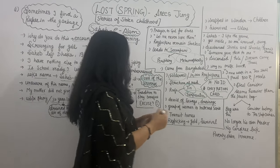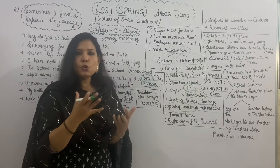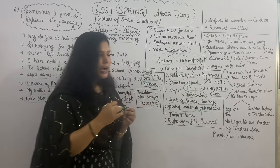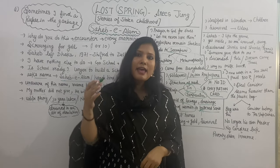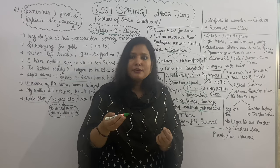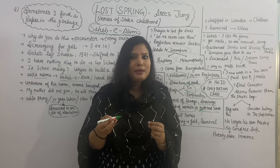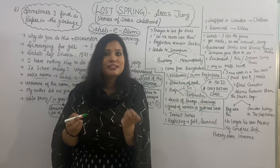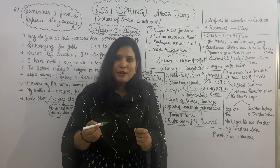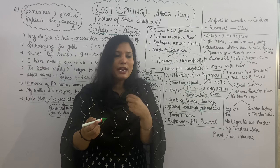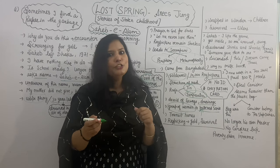In Seemapuri, Anees Jung had a conversation with a group of women sitting in tattered sarees — tattered means very dirty and torn sarees. She asked them why they left Dhaka. These women replied that they had houses, they had fields, but they were famished — they were actually not getting food. So that's why they prefer to live wherever they find food. Their children go to sleep without having a full stomach, suffering hunger pains. That's why they are living in Seemapuri.